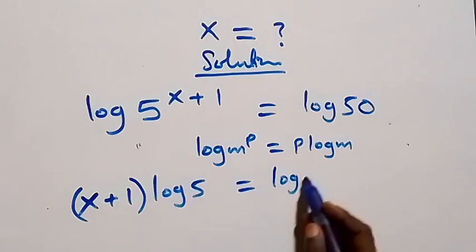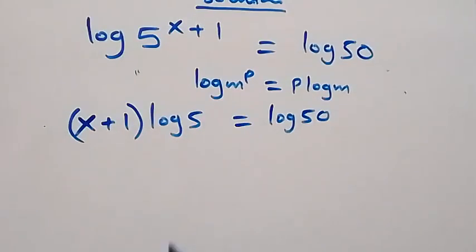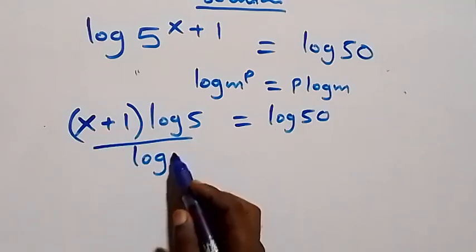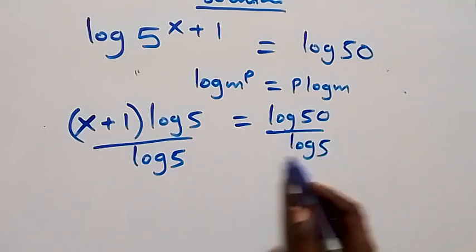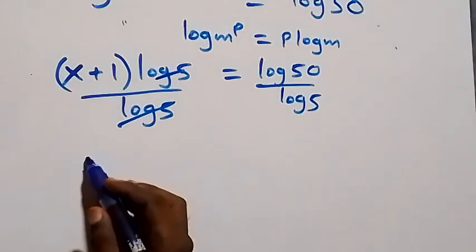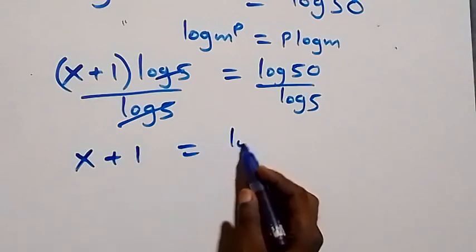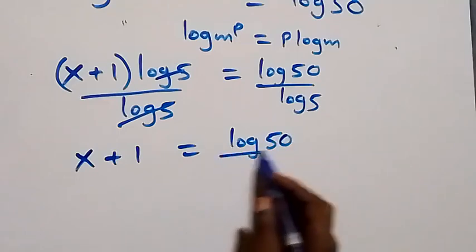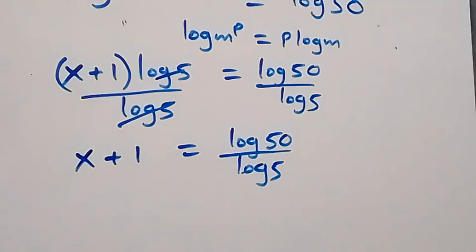This equals log 50 on the right side. Next step, we can divide both sides by log 5. Log 5 cancels each other, which implies we have x plus one now equals log 50 over log 5.